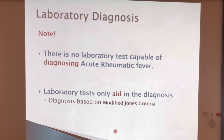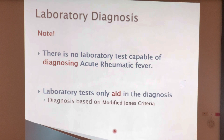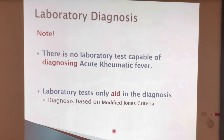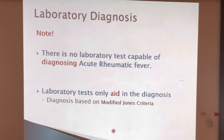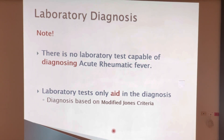There is no individual lab test and no group of lab tests that can definitively identify acute rheumatic fever. However, we use the lab tests we're discussing along with the modified Jones criteria in order to determine whether a patient has acute rheumatic fever. Laboratory tests in this case will only aid in the diagnosis.